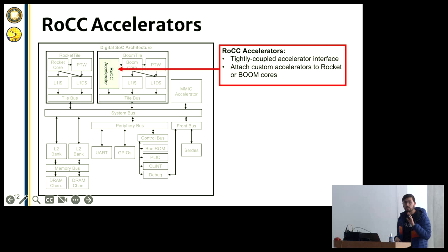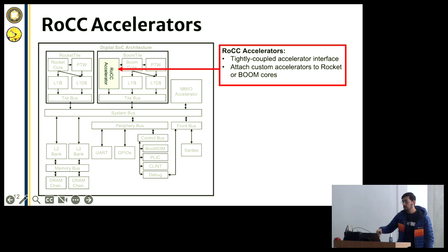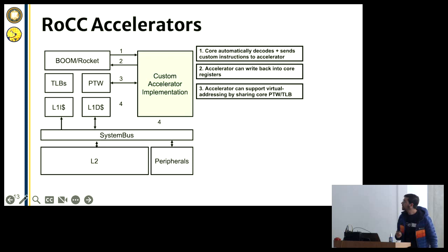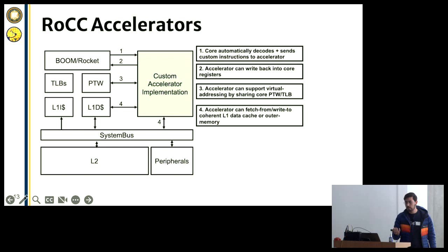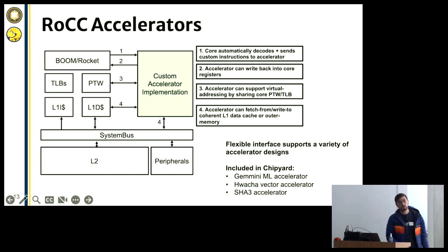ChipYard also supports something called the RoCC accelerator interface, which we use at Berkeley for a lot of tightly coupled accelerator research. This includes machine learning accelerators, vector accelerators, and the like, and we're able to plug these into things like Rocket and Boom. You can view it as a way to interact with processor registers and the memory system. We have examples like the Gemmini machine learning accelerator — a very popular machine learning accelerator — as well as vector accelerators and much more. You can plug in your own accelerator in SystemVerilog or Chisel.